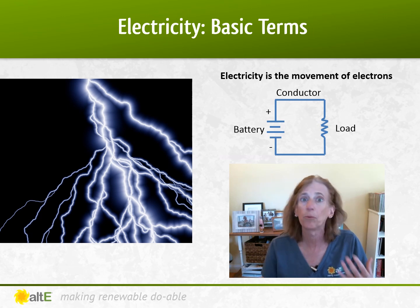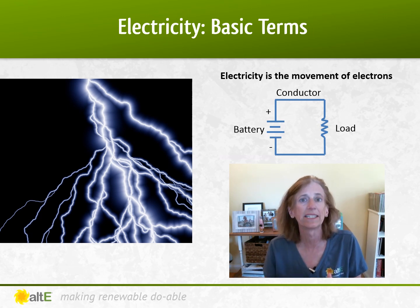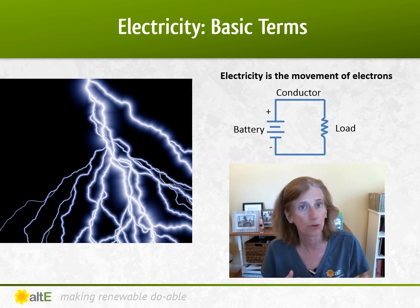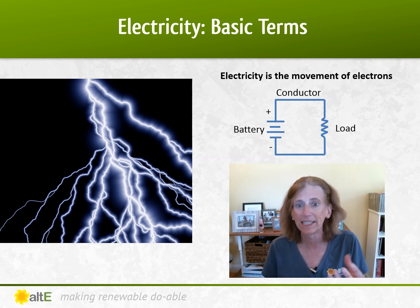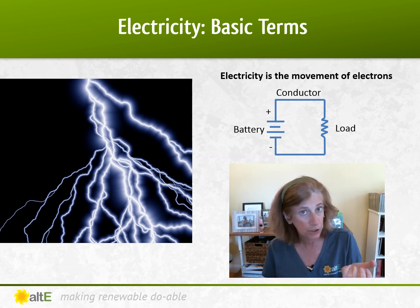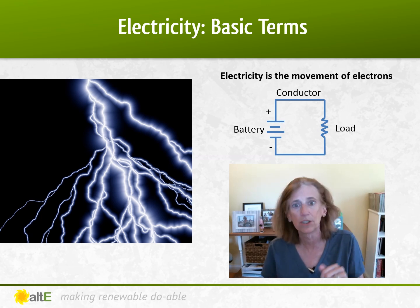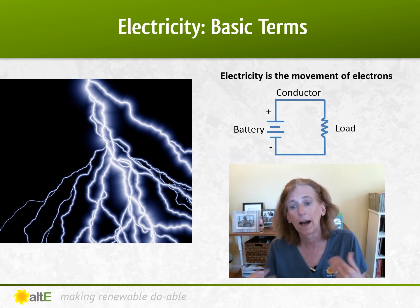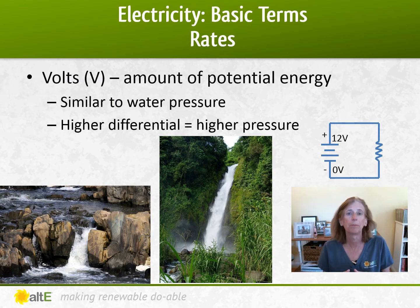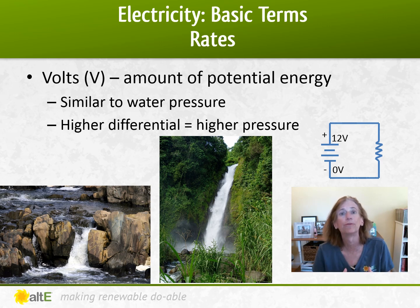So if we start with the very basics, we're going to be discussing the terms that we use to describe electricity and solar systems. Electricity is the movement of electrons, and we're basically going to be talking about having a power source. In these examples it's going to be a battery, and the electricity is traveling along the conductor — the wires — going through a load, and then back into the batteries. So to do that, we have to talk about four basic terms to describe the different rates of energy.